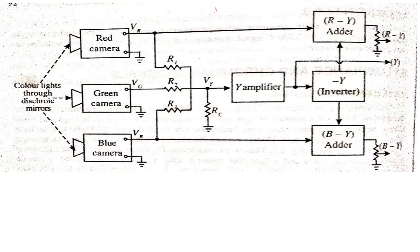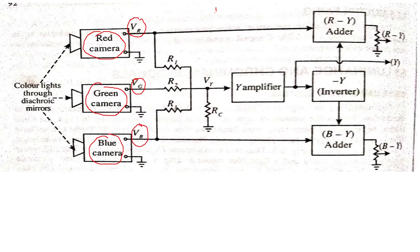The red camera produces the red voltage called VR, the green camera produces the green voltage called VG, and the blue camera produces the blue voltage called VB. This figure shows how we obtain a luminance signal, which gives brightness information, and the color difference signals between R, G, and B, and how they are combined to form the video signal.